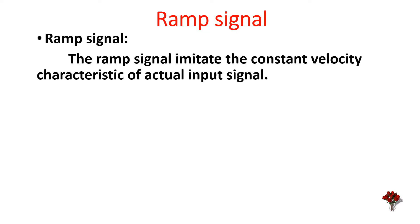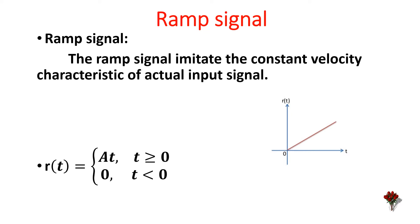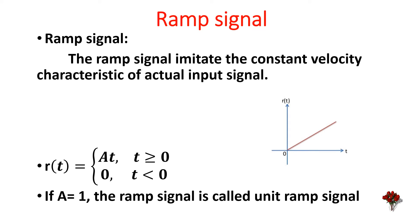Ramp signal. The ramp signal imitates the constant velocity characteristic of the actual input signal. Mathematically, the ramp signal is represented as r(t) = at for t > 0, and r(t) = 0 for t < 0. If a = 1, the ramp signal is called the unit ramp signal.